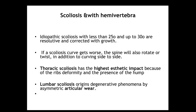Idiopathic scoliosis of less than 25 to 30 degrees may be self-resolving as the child grows. However, if the curve worsens, the spine will also rotate and twist in addition to curving sideways. Thoracic scoliosis has the highest aesthetic impact because the deformed ribs create the presence of a hump. Lumbar scoliosis leads to degenerative phenomena due to asymmetric articular wear, resulting in pain in adulthood.